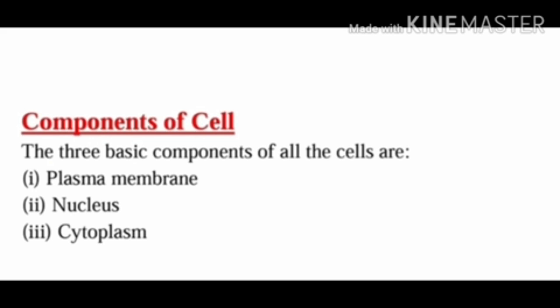Now you know about the components of cells. There are three basic components of cells. First is plasma membrane. Second is nucleus. Third is cytoplasm.